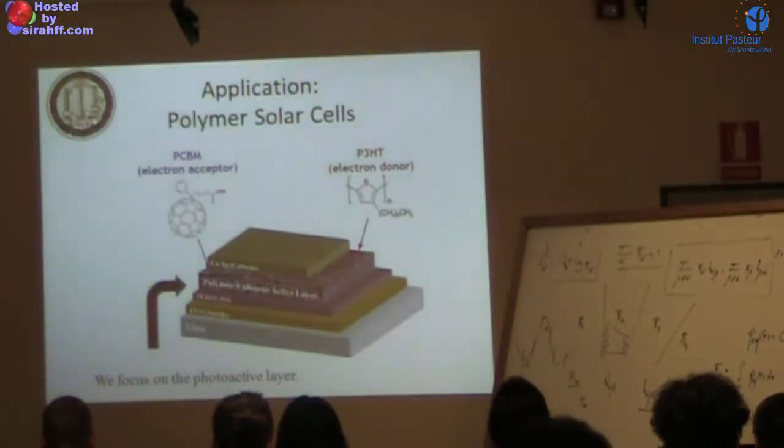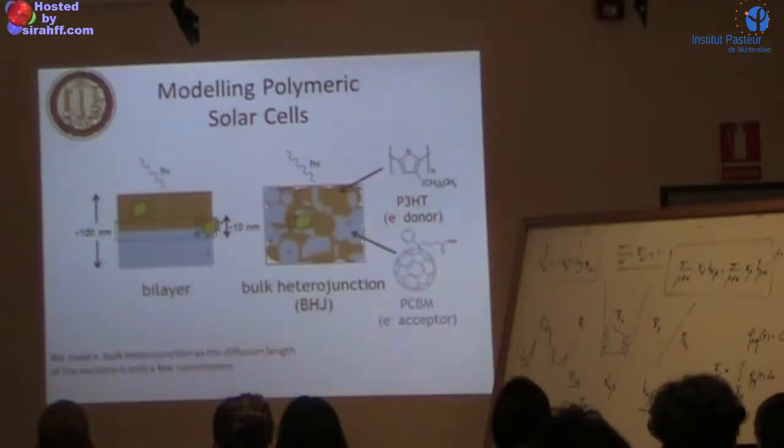These are the two materials. P3HT is the electron donor, the polymer - polymerization direction is along the thiophene rings. PCBM is mono-PCBM with only one substitution - this is the C60 cage with this side chain here.